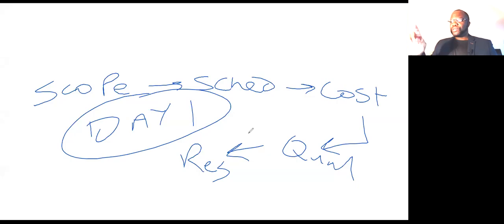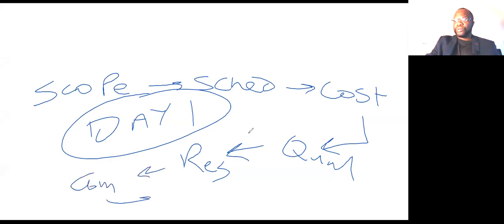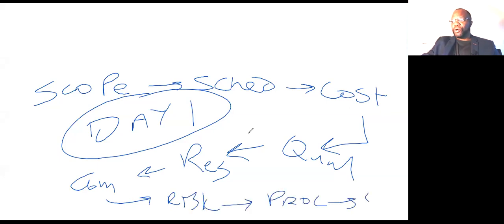Going back to what I'm saying: you could very well have scope, schedule, cost, quality, and resources all planned on one day. You could even have communications, risks, procurement, and stakeholder all on the same day — maybe even in the same hour. It depends on your project size. So this is what the purpose of this video is.